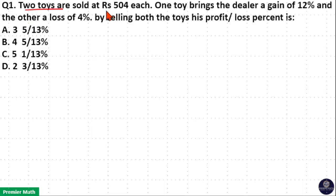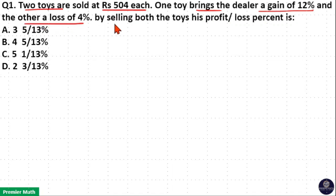Two toys are sold at rupees 504 each. One toy brings the dealer a gain of 12% and the other a loss of 4%. By selling both the toys, what is his profit or loss percent?